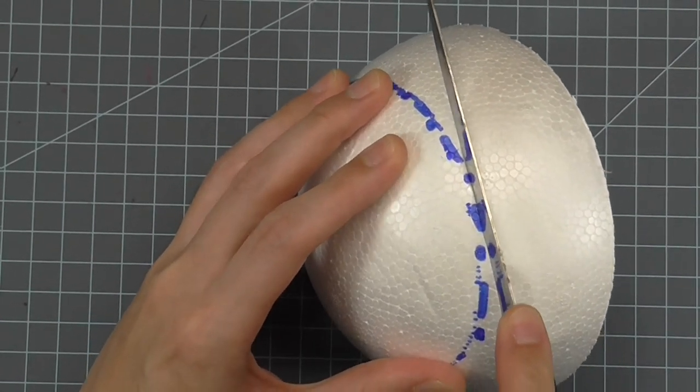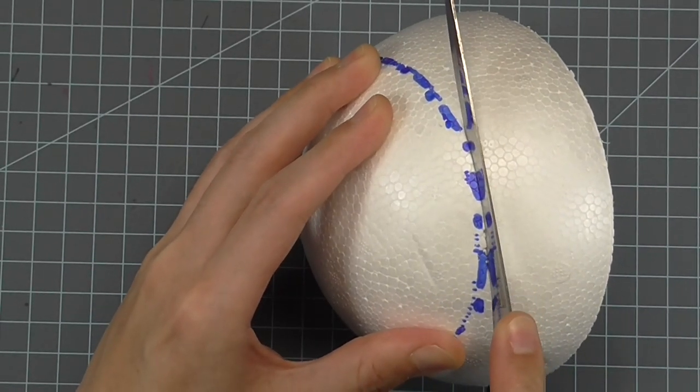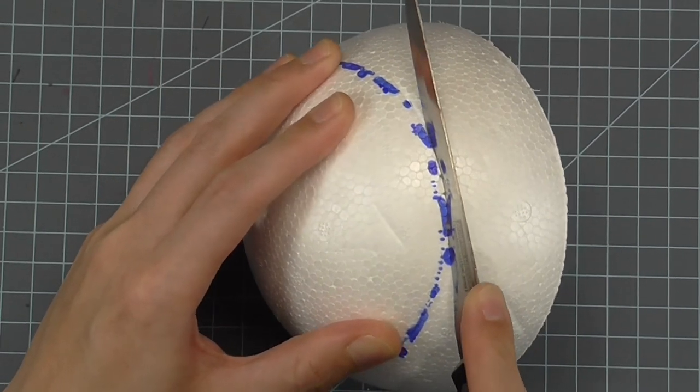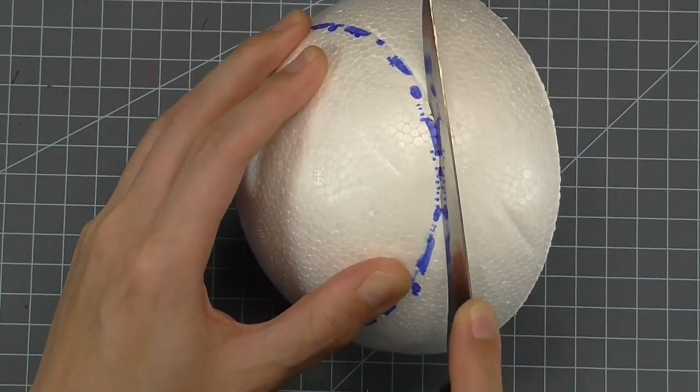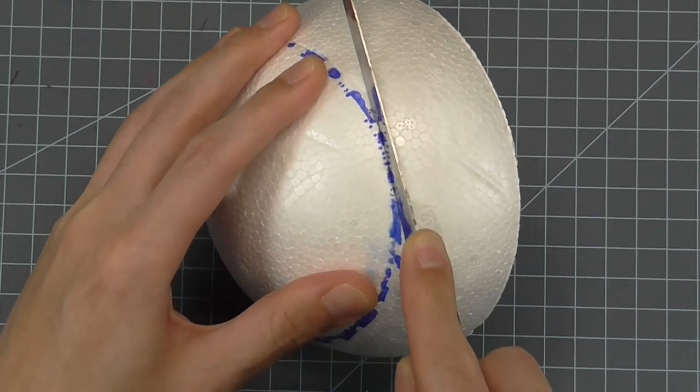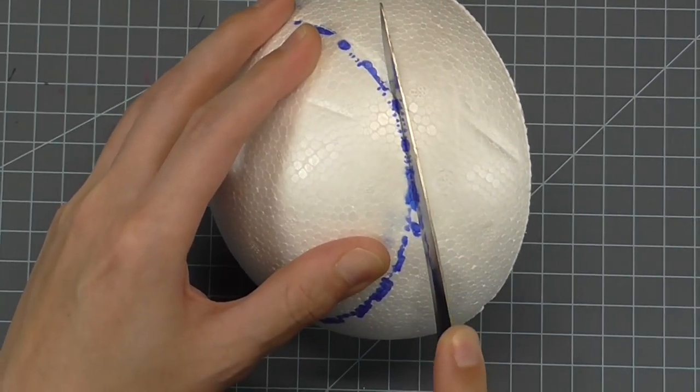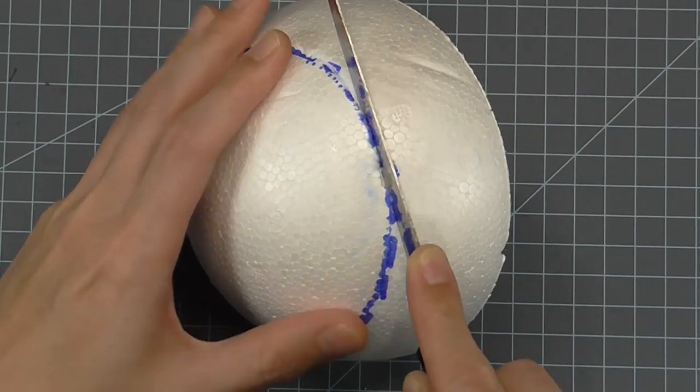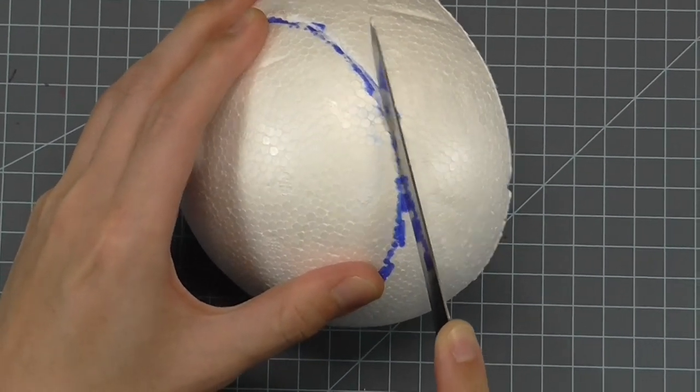With your knife, following the line you just drew, cut in about a quarter of an inch deep. Do not go any further than that. Make this quarter inch cut all the way around exactly on the line as you've drawn it. Do not worry if little bitty chunks of styrofoam come out.